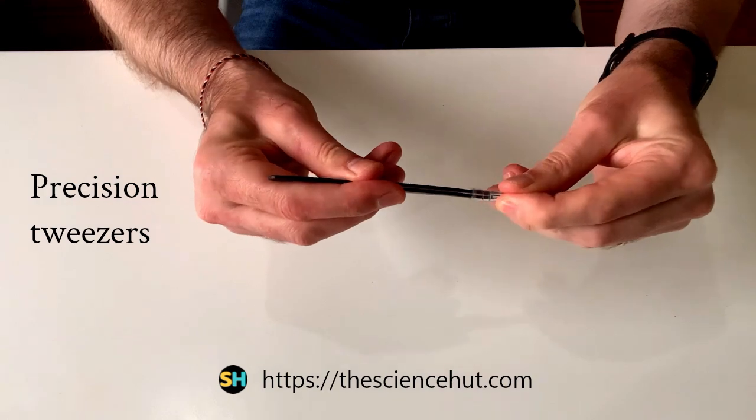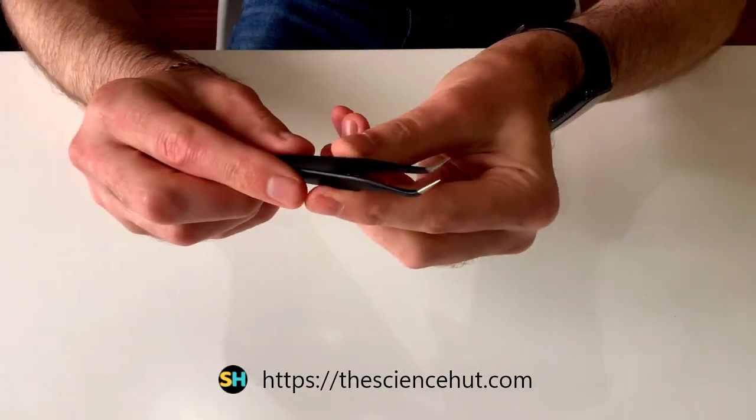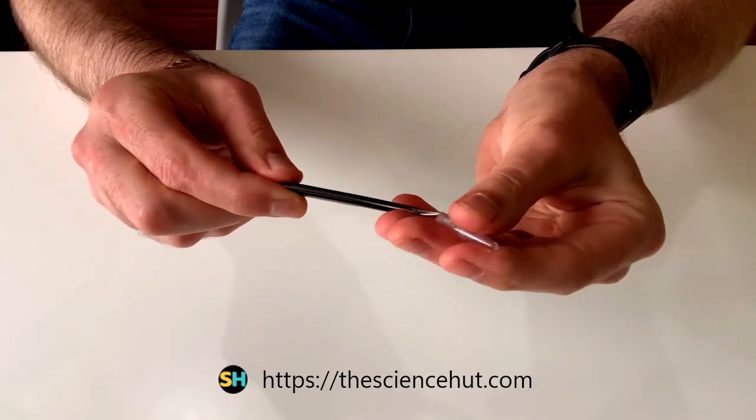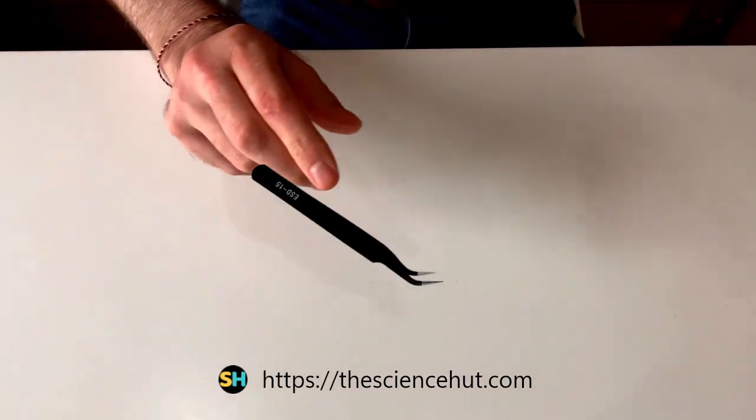A precision tweezers. Many components are very small, the tweezers allow you to pick them up easily and help position them into place. Note the tips are angled.